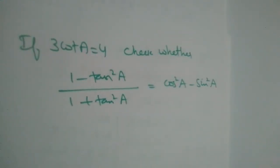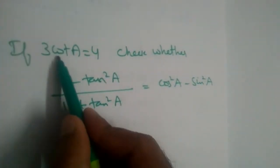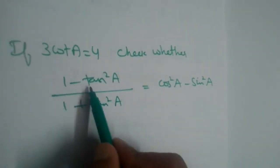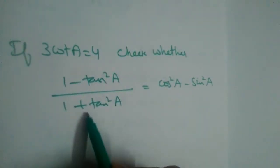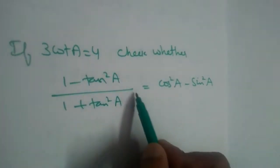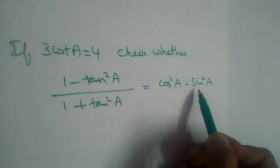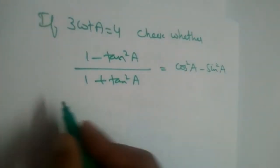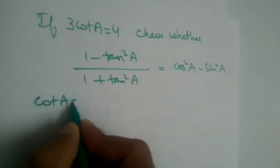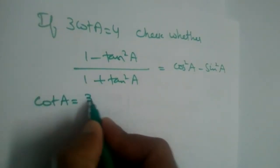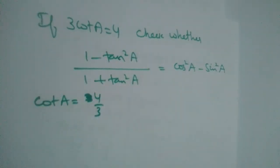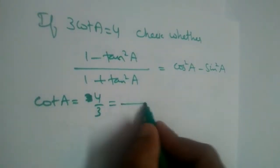We have a problem: if 3·cot(a) = 4, check whether (1 - tan²a) / (1 + tan²a) is equal to cos²a - sin²a or not. We can write cot(a) as 4/3. But what is the formula for cot?